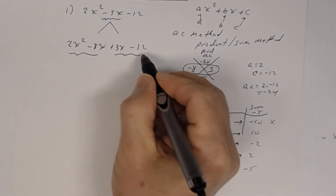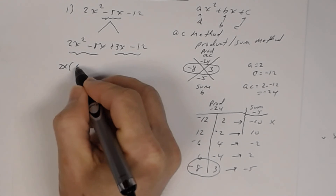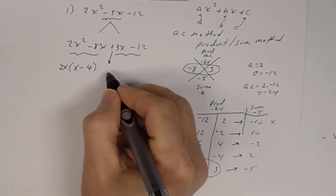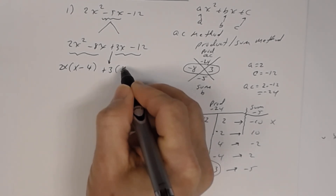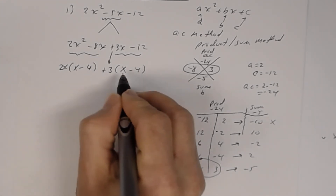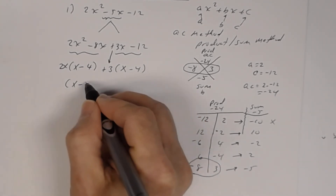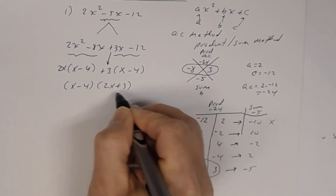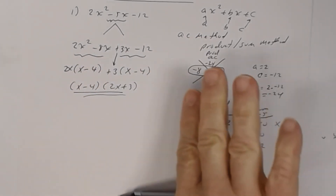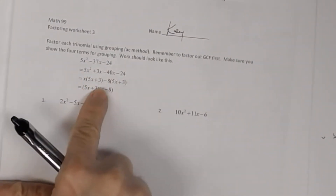Group the first two terms and the last two. From the first group, factor out 2x to get 2x times (x minus 4). From the second group, always factor out that middle sign, so factor out positive 3 to get 3 times (x minus 4). Since both groups share (x minus 4), factor that out to get (x minus 4)(2x plus 3). That's the answer.